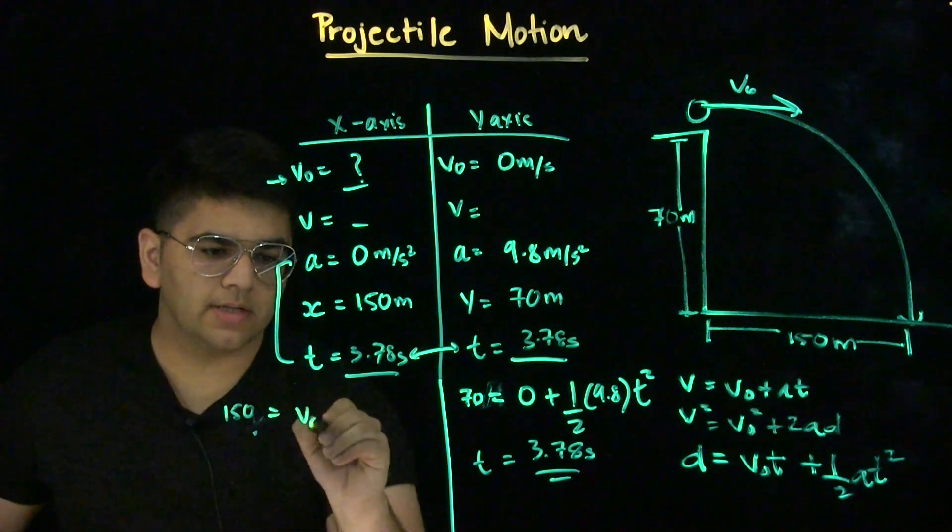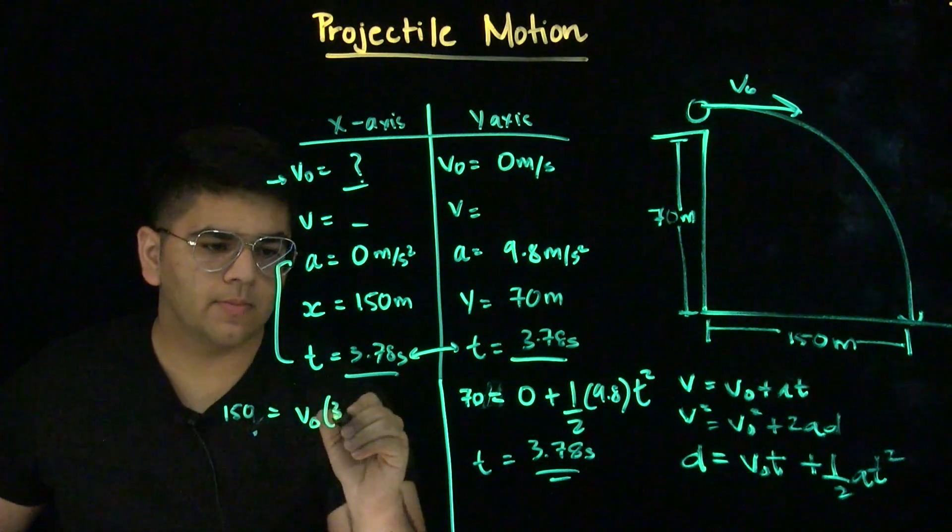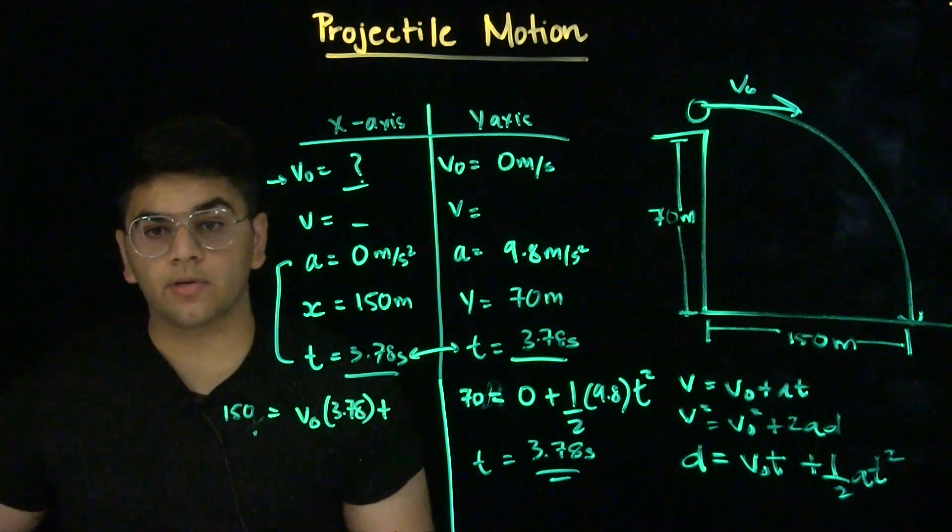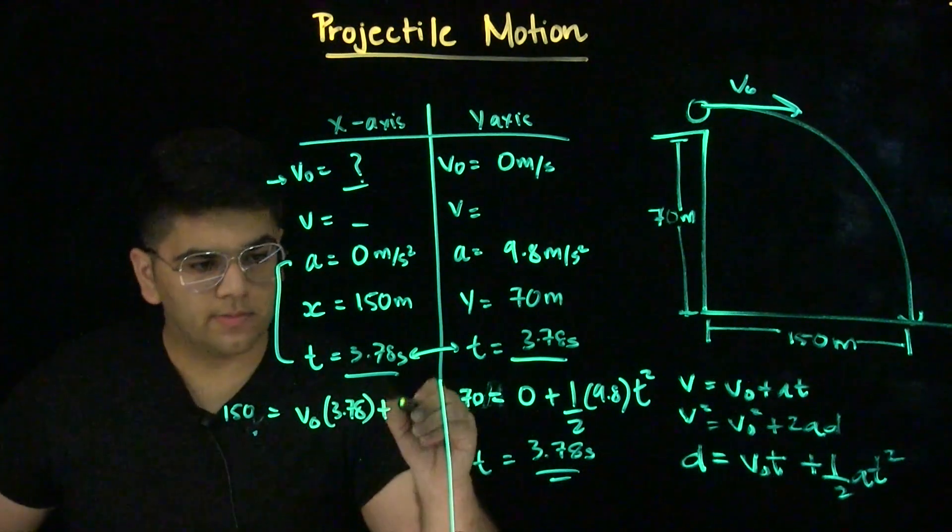We know displacement is 150 meters in the x-axis. We do not know initial velocity, but we do know time. And our acceleration is 0, so our second term in this equation will be 0.